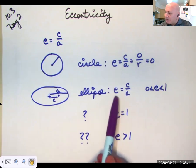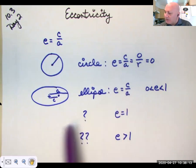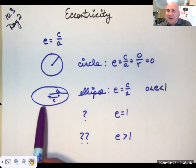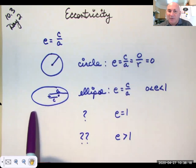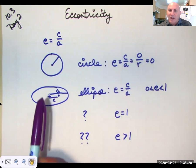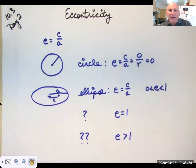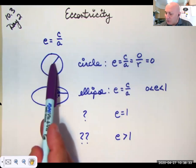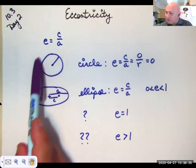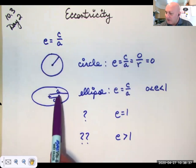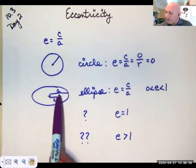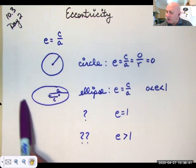Now, in an ellipse, eccentricity is also c over a, but since a squared minus b squared is always c squared, then a will always be bigger than c. By the way, conics will always, always, always curve around their focal points. You'll notice the focus is the center, the circle curves around it. Here are your focal points in an ellipse, and an ellipse curves around it.